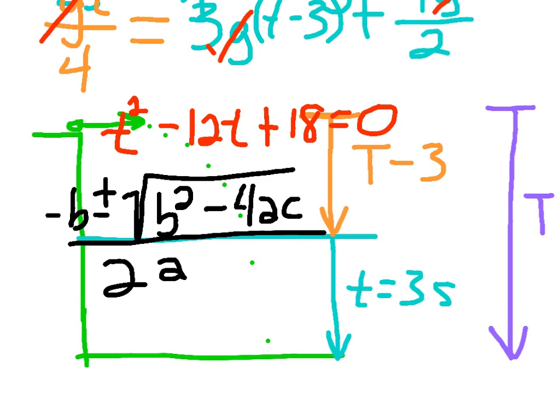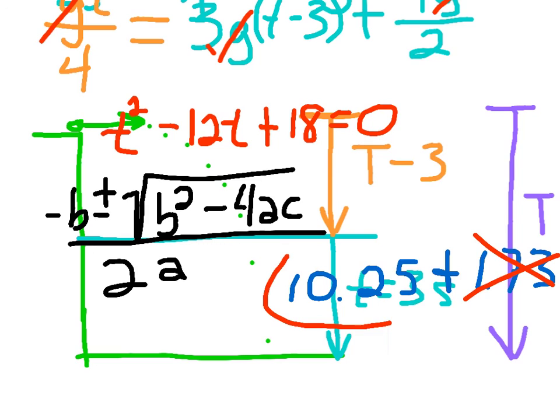Now, rather than plugging it in and showing you all of that, because I've already talked for 10 minutes, I'm going to go ahead and tell you that my final answer came out to be 10.25 and 1.73. Well, I know my answer has to be at least more than 3, so this answer is not possible. So my final answer is 10.25 seconds. And that is my answer for question number three.